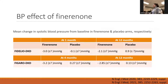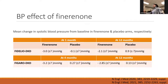Regarding the blood pressure effect of finerenone, because of its pharmacokinetic differences, finerenone essentially has less blood pressure effect than steroidal MRAs. In Fidelio and Figaro, compared to placebo, systolic blood pressure during follow-up decreased on average about 2 to 3 millimeters of mercury.